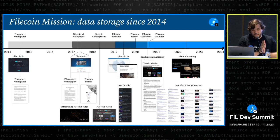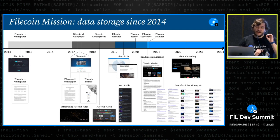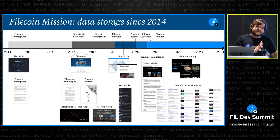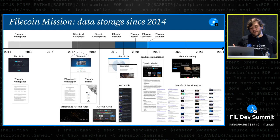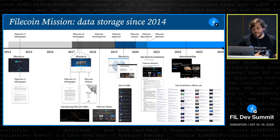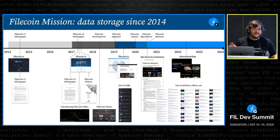Filecoin started in 2014, but then a lot of us took a side quest into making IPFS for many years. That was a big crypto winter at the time, so we focused on building and growing IPFS. Then in 2017, we revamped the entire protocol with a much larger team and redesigned the whole thing. So the Filecoin you're using today is actually Filecoin V2, not V1.